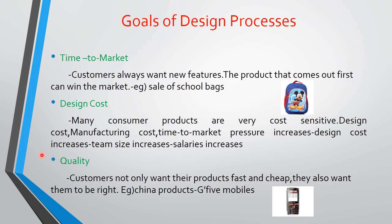The goals of design process — there are three important goals. One is time to market, second is design cost, and third is quality. Time to market: customers always want new features. The product that comes out first can win the market. For example, sale of school bags — the sale of school bags will be very high during the months of May and June.